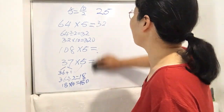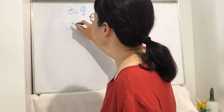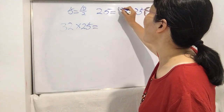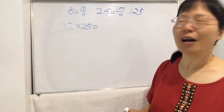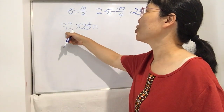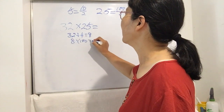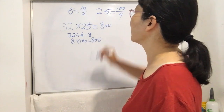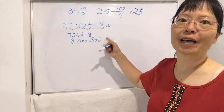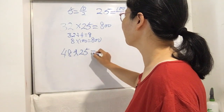Now how about times 25? I'll give you some examples. Suppose 32 times 25. In the beginning you need to know that 25 is 100 divided by 4. So in this case, 32 divided by 4 is 8, and 8 times 100 is 800. So the answer is 800. In the future, if you see any number times 25, use this way: first number divided by 4, then times 100.